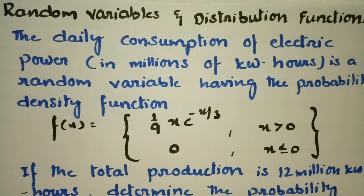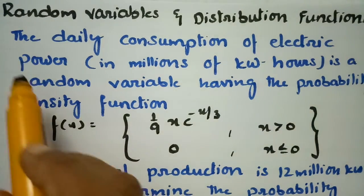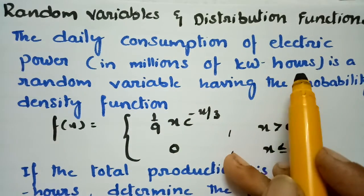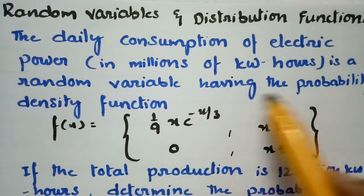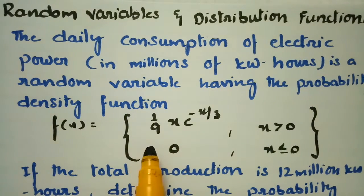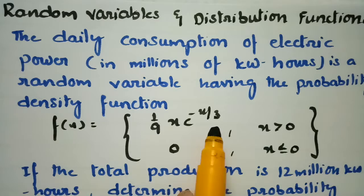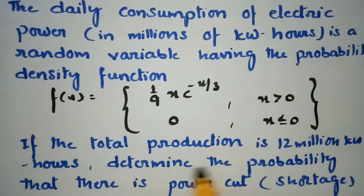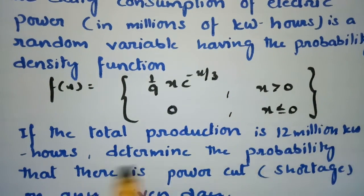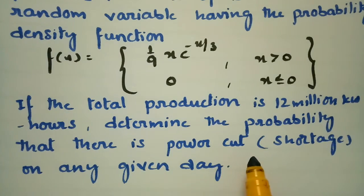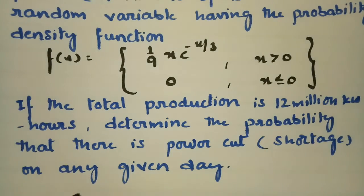The problem is on random variables and distribution functions. The daily consumption of electric power in millions of kilowatt hours is a random variable having the probability density function f(x) = (1/9)·x·e^(-x/3) when x is positive, and 0 when x ≤ 0. If the total production is 12 million kilowatt hours, determine the probability that there is a power cut shortage on any given day.